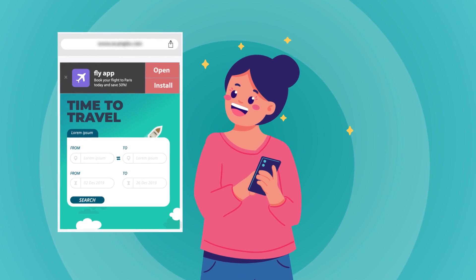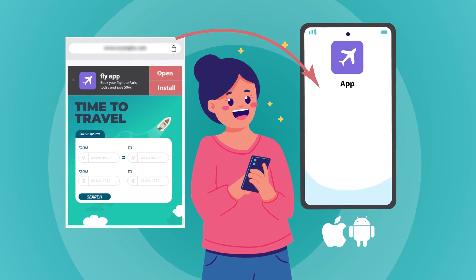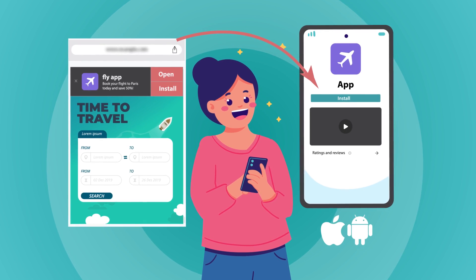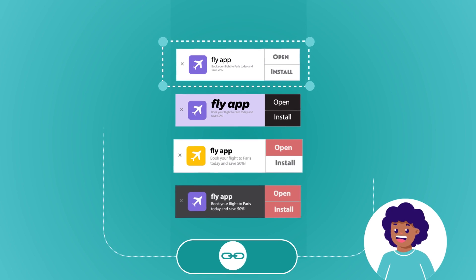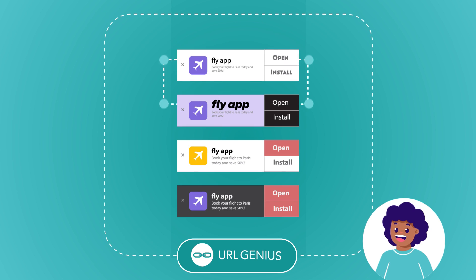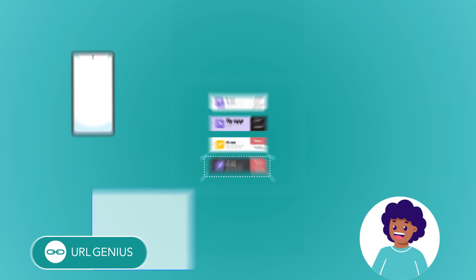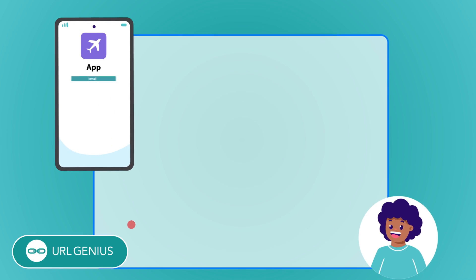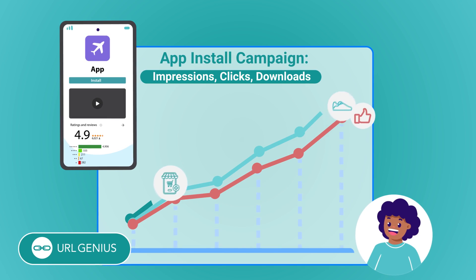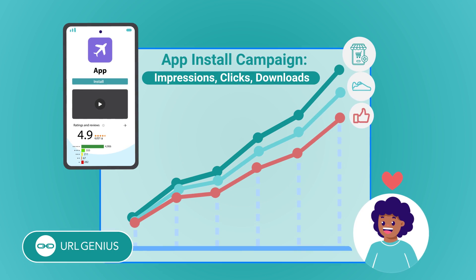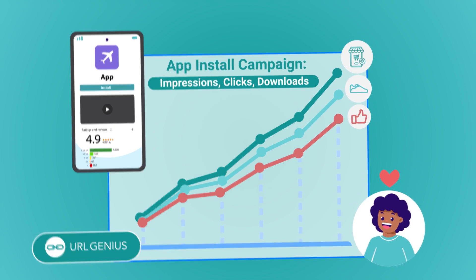URLGenius banners maximize visibility on iOS and Android and are deployed with a single line of code on your mobile website. Real-time control lets you optimize your banner design for maximum conversions while measuring impressions, clicks, closes, and of course app installs. Plus, URLGenius app install banners are SEO friendly and privacy compliant.